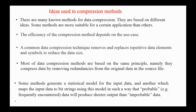There are many known methods for data compression, and some methods are more suitable for certain applications than others. The efficiency of the compression method depends on the use case. A common data compression technique removes and replaces repetitive data elements and symbols to reduce the data size. Most data compression methods are based on the same principle: they compress data by removing redundancies from the original source file. Some methods generate a statistical model for the input data and map input data to bit strings, so that frequently encountered data produces shorter output than improbable data.